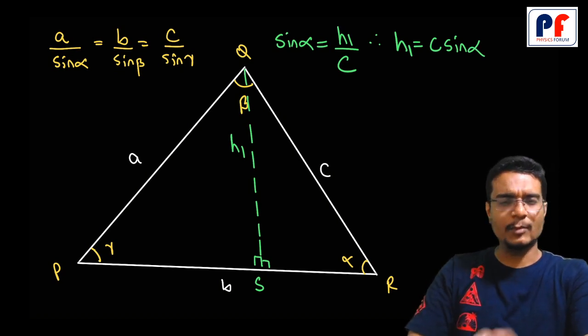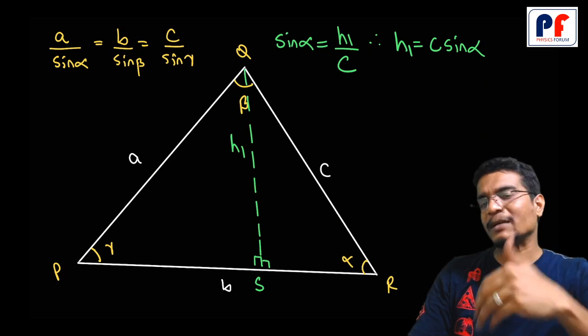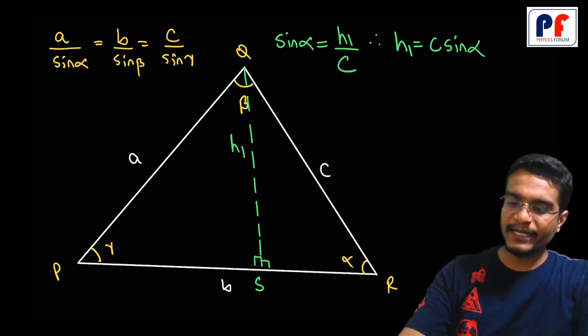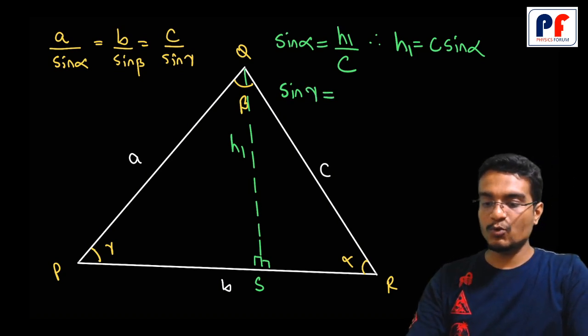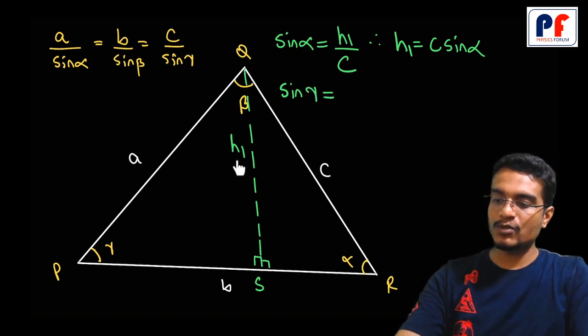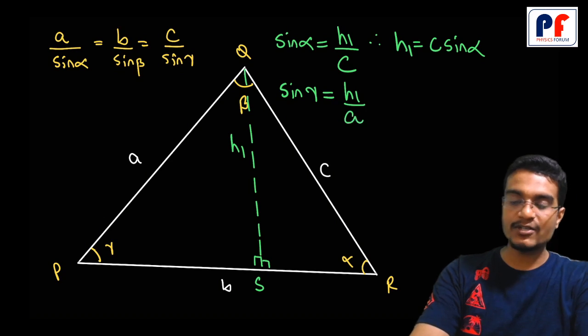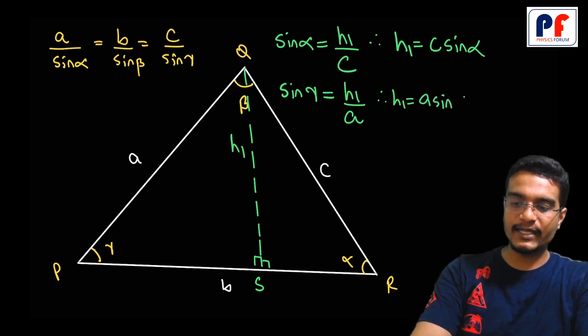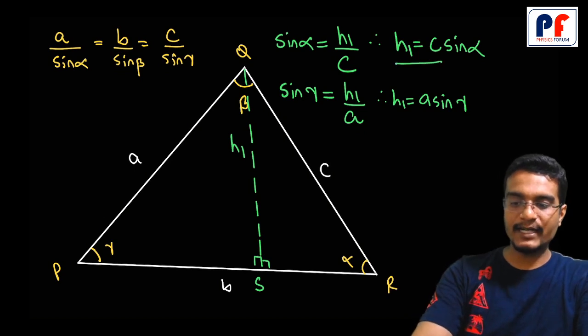Now let's see the other triangle. Sine gamma equals opposite upon hypotenuse, which is A. So sine gamma equals h1 upon A. Therefore, h1 = A sin gamma.